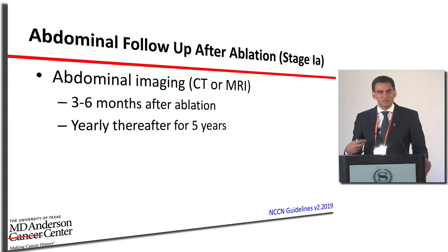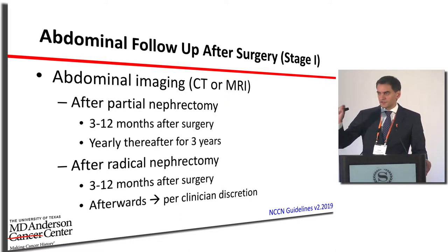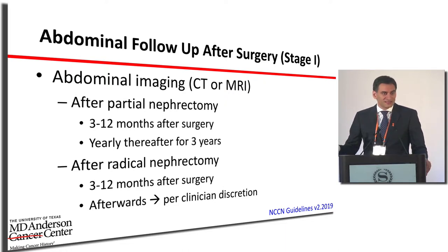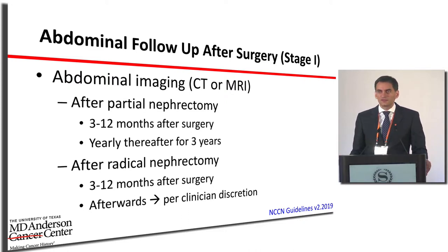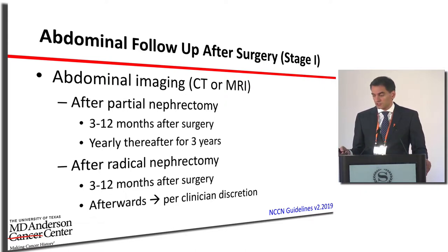For follow-up after surgery for stage 1, whether partial or radical nephrectomy, there is a difference: with partial nephrectomy, we still have remaining kidney to monitor for recurrence. Follow-up is initially three to twelve months after the operation, then yearly for three years for partial nephrectomy. For radical nephrectomy, it's three to twelve months initially, then per clinician discretion.